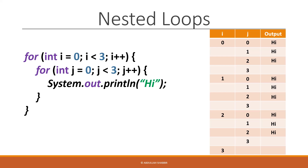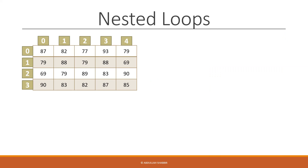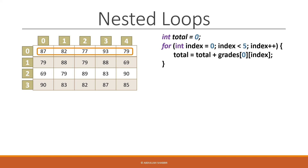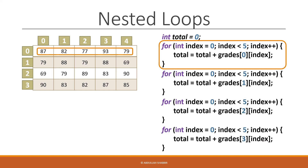Let's see how we can use nested loops to navigate through a two-dimensional array. Going back to our two-dimensional grid, we want to go through every single number in it. We already know that a single loop can go through every item in one row — for example, a loop over row index zero would count all those numbers and add them to a total. If we wanted to add all other rows, we could write a loop for each row, with the only difference being the row index.